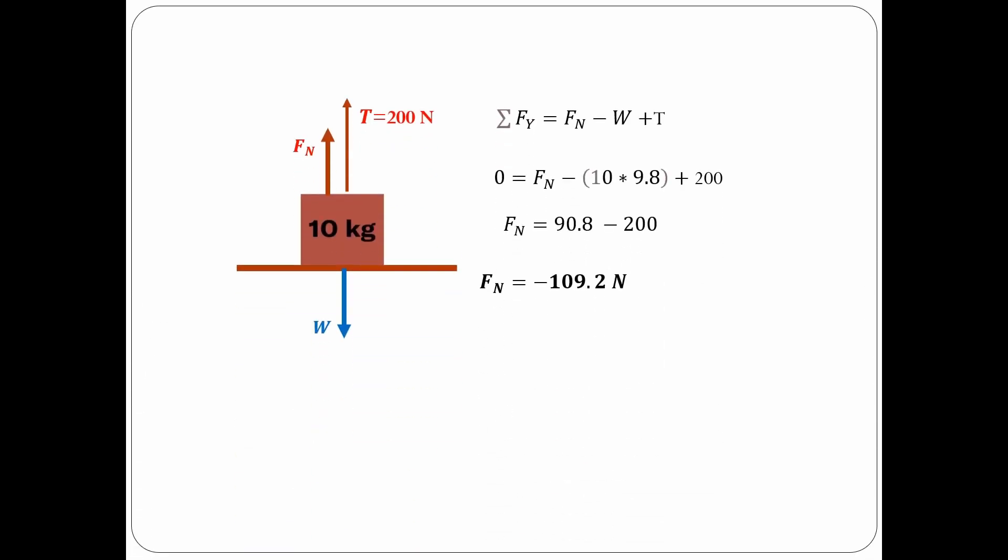Let's say we have the same mass and we apply a tension force of 200 newtons. So in this example, it indicates a negative 109.2 newtons of normal force. Now the question is, is it possible to have a negative normal force? If you have a negative normal force, what does it mean?